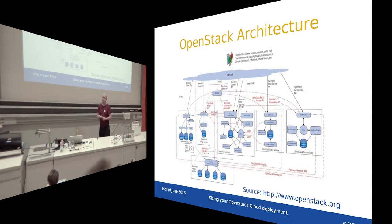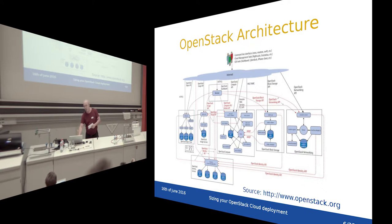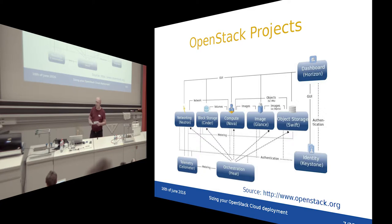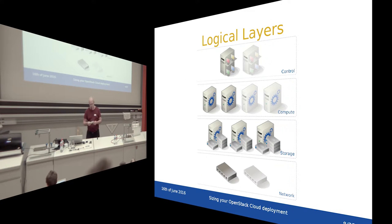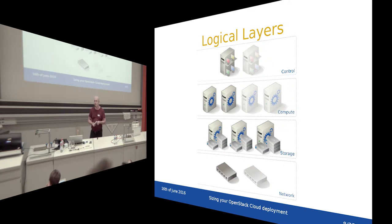The OpenStack architecture is fairly complex. The good thing is that a lot of functionality is encapsulated into components — in OpenStack speak, into projects. We can simplify this view into four logical layers. On the first logical layer, the control nodes as a control layer, is where you have everything needed to run your cloud apart from storage and computing — things like telemetry, identity management, dashboards, and API access.